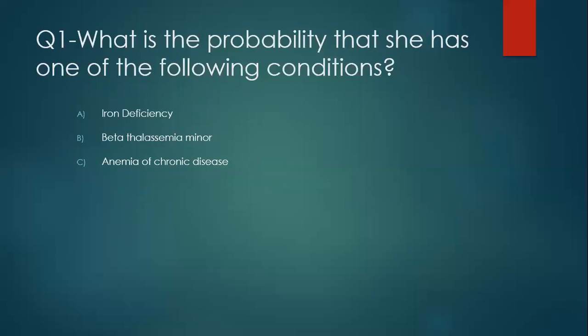The third differential diagnosis is anemia of chronic disease. There are many conditions that cause anemia of chronic disease, such as chronic infection, malignancy, chronic renal disease, chronic liver disease, hypothyroidism, connective tissue disease, and so on. In this lady, the history was not suggestive of anemia of chronic illness, especially renal disease or chronic infection or connective tissue disease. But sometimes chronic disease is deceiving, especially in malignancy and hypothyroidism. Still, we don't have strong evidence of anemia of chronic disease.